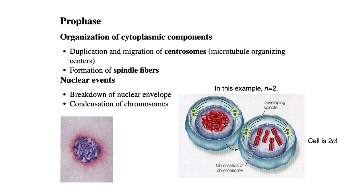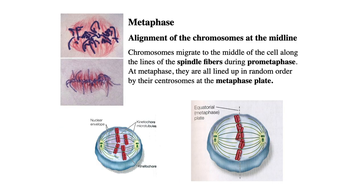In prophase, everything kind of condenses down and we get nice tiny chromosomes. They start connecting to the spindle fibers, which are connected in turn to the centrosomes. There are also motor proteins — actin and myosin — playing a role here, so we can move our chromosomes around. And in metaphase, those chromosomes get pushed and pulled and prodded and moved into the center of the cell. This is called the metaphase plate.